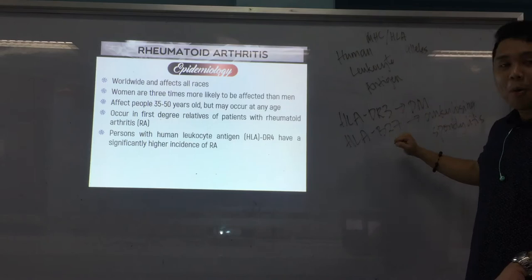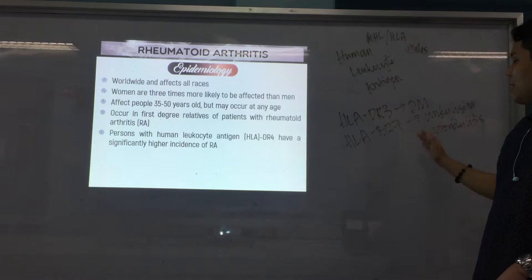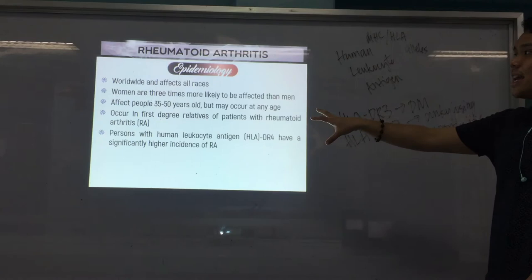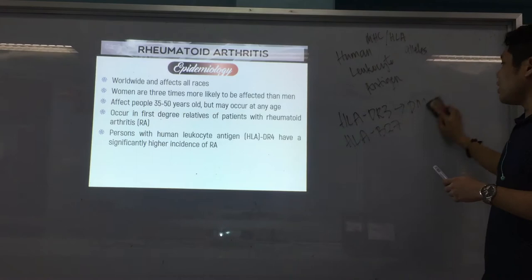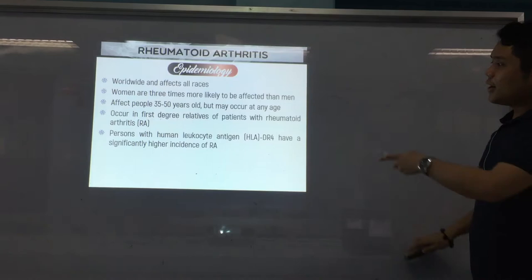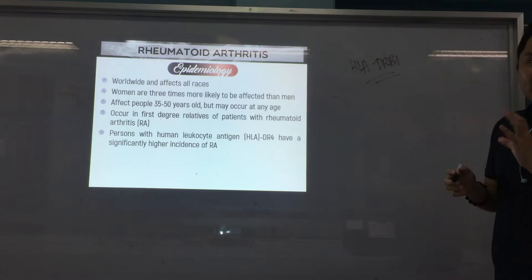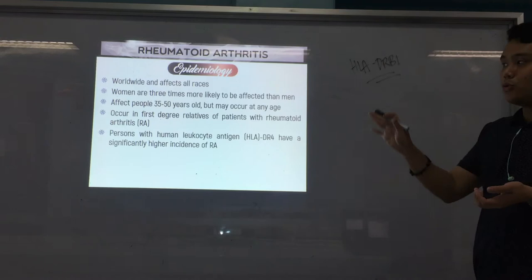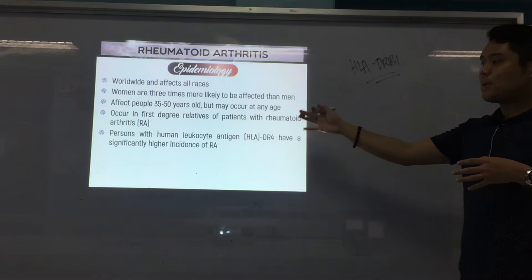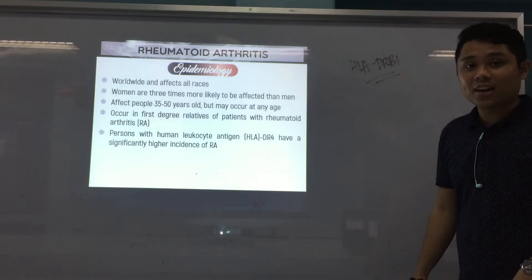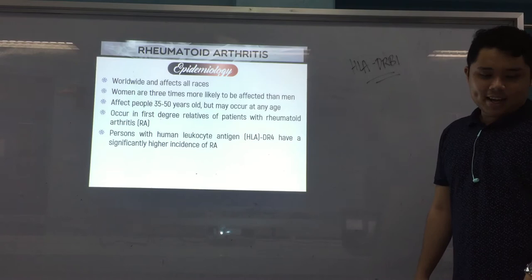For example, HLA-DR3 for diabetes mellitus, and HLA-B27 — very common, very popular, very specific — that's for ankylosing spondylitis. Same with RA: HLA-DR4, and according to the Stevens 4th edition, also HLA-DRB1. If these HLA markers are found in a patient's genes, then they are significantly more prone to developing this kind of disease.